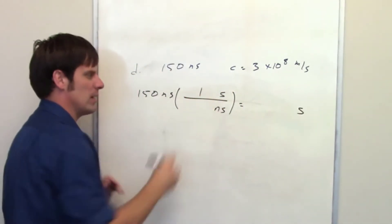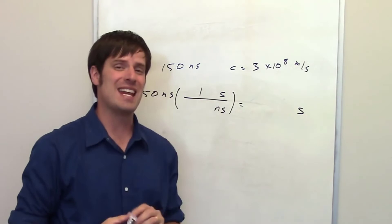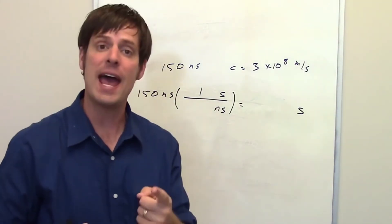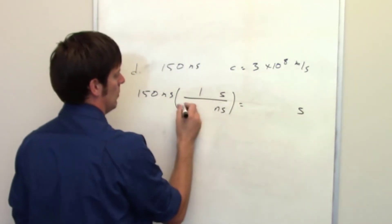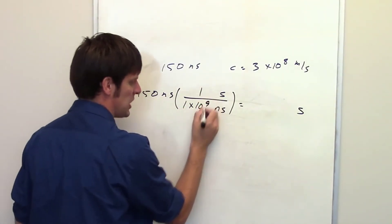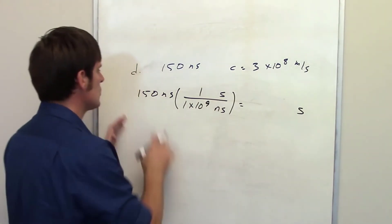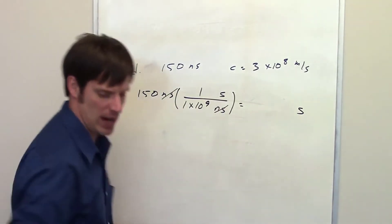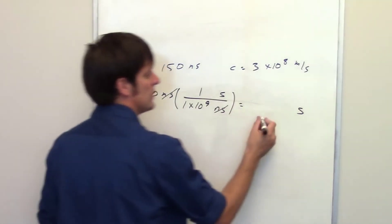How many nanoseconds are there in one second? Well, I remember that nano is associated with the number 9 because both of them start with the letter N. So one second happens to be 1 times 10 to the 9th nanoseconds. So 150 nanoseconds divided by this number is going to give me my seconds because my nanoseconds cancel each other out.